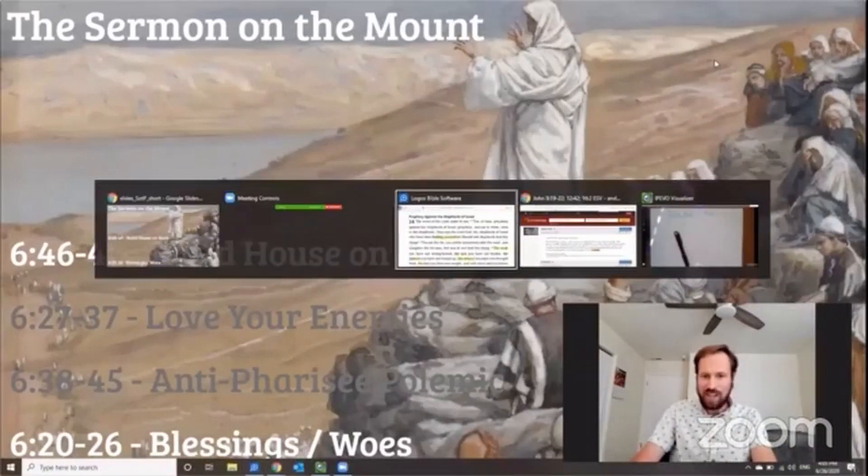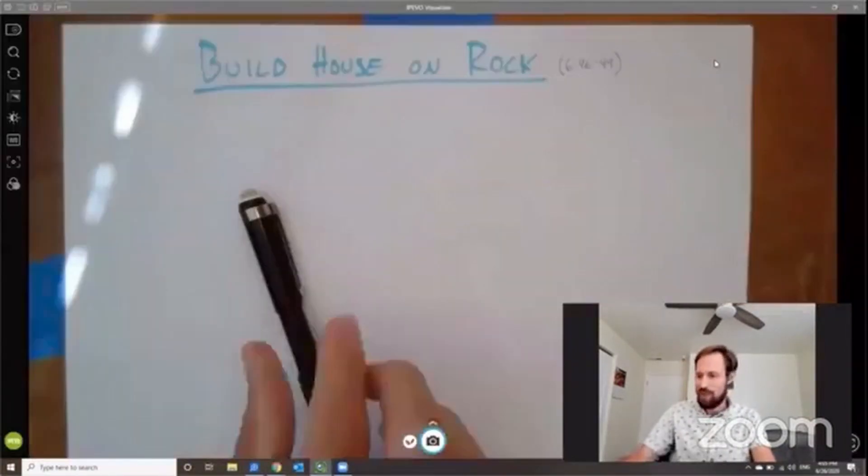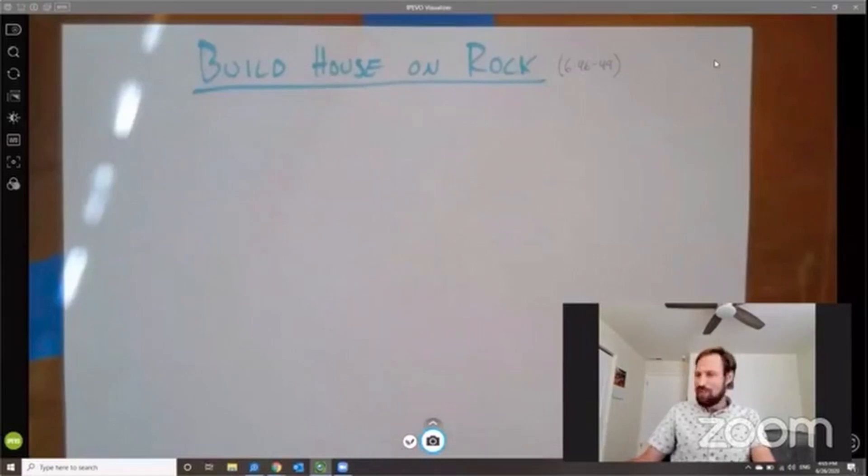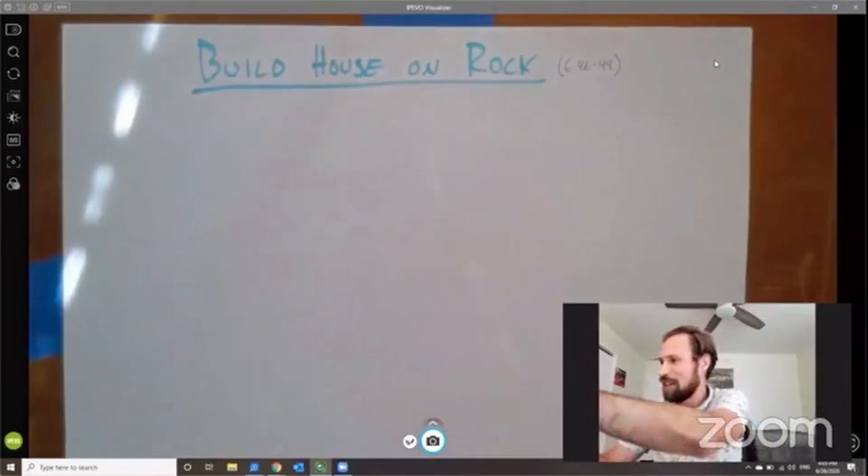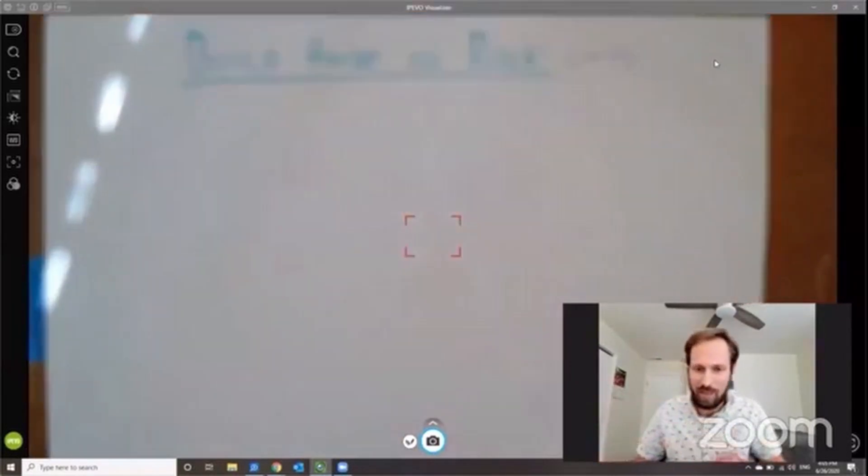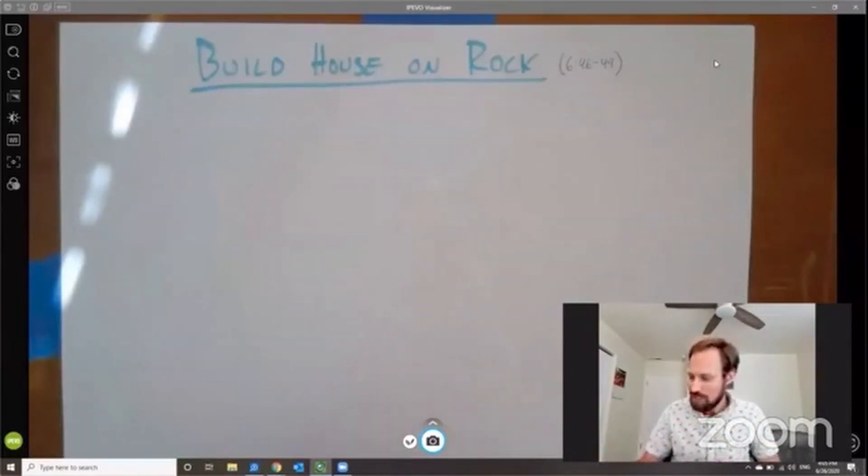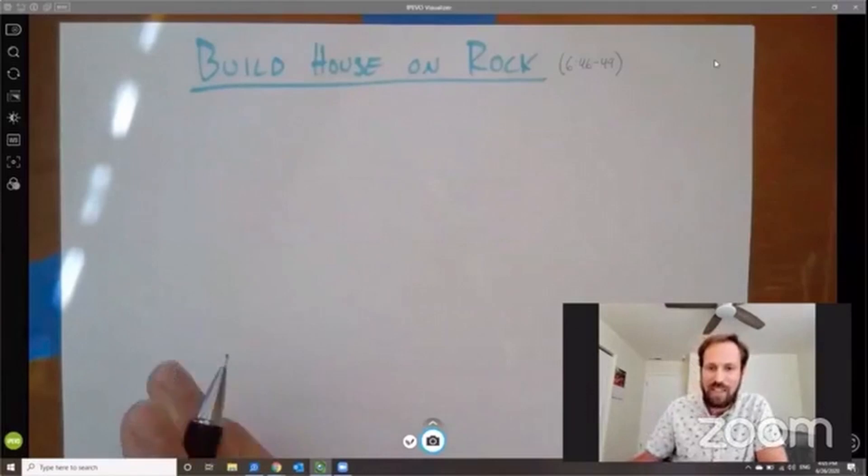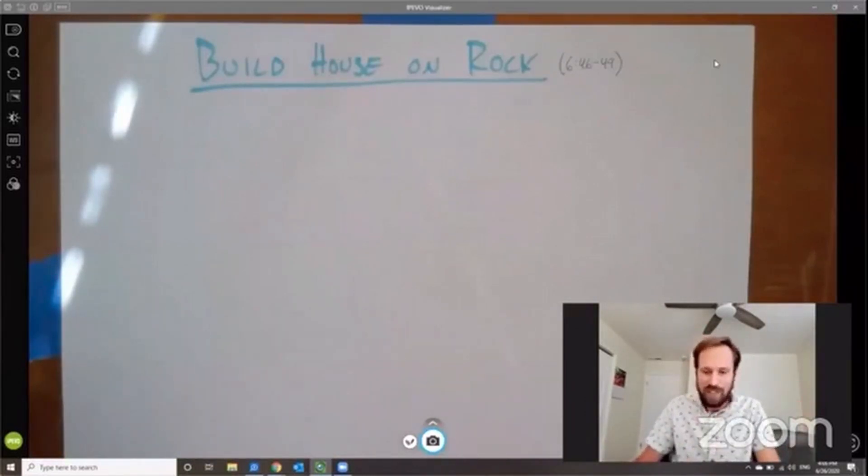So in order to do that, I'm going to get a little bit of help from this fancy-dancy imitation whiteboard. This is a little document camera. I'm going to focus it a little bit. There we are. This is going to help me kind of explain and walk through some of the details of the Sermon on the Mount. I hope it works out for you. I hope it's clear, and I hope it's helpful.